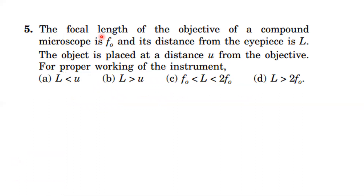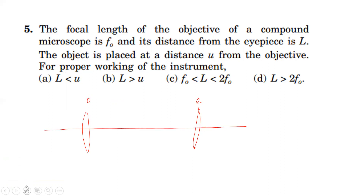Next question: the focal length of the objective of a compound microscope is F0, and its distance from the eyepiece is given. The object is placed at a distance from the objective for proper working of the instrument. This is the objective lens, and this is the eye lens. The object is placed between 2F0 and F0. The image is formed beyond 2F0. The distance between the objective and the eye lens is noted.